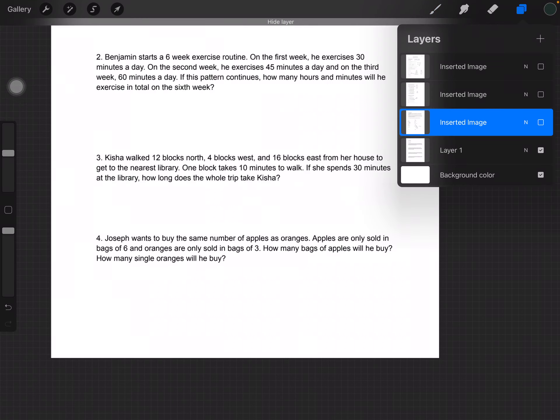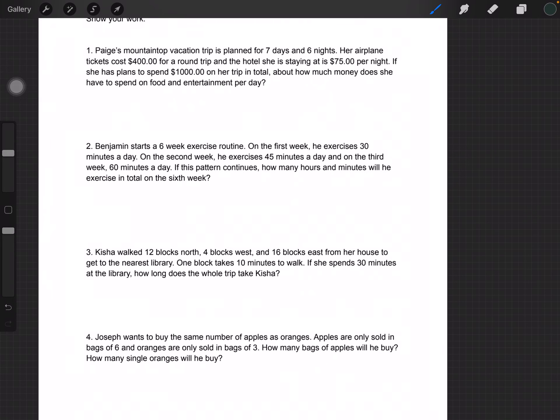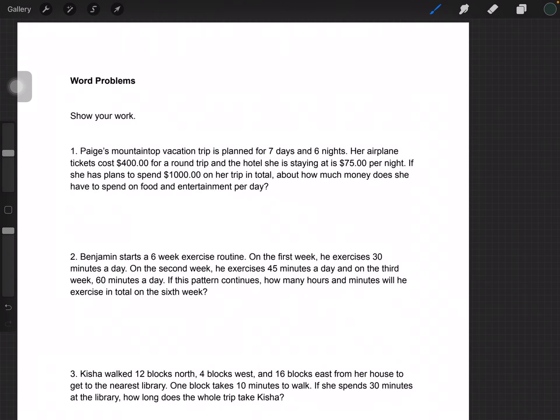Moving on, the last page is just word problems. Let's choose one to do. Number 1 is saying: Paige's mountaintop vacation trip is planned for 7 days and 6 nights. Her airplane ticket costs $400 for a round trip, and the hotel she is staying at is $75 per night. If she has plans to spend $1,000 on her trip in total, how much money does she have to spend on food and entertainment per day? Let's see what we know.